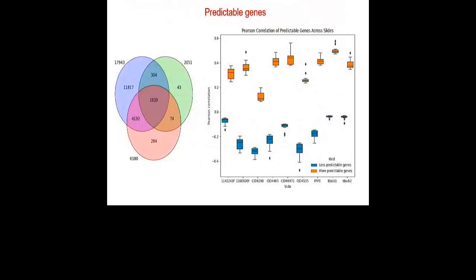We also looked at which genes are predictable, with the assumption that not every gene can be predicted. We looked at different databases listing genes that are essential for cells and cancer, and tested how many of those genes can be predicted. For a subset of genes the model performance is really high compared to the remaining set, and this can be applied to gene panels later in the clinic.